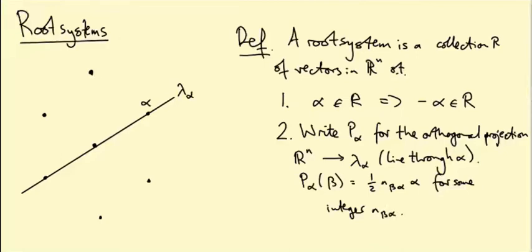So in this example, let's see what we get. If I just orthogonally project this root up here onto this line, I end up halfway along from the origin to alpha. So in this case, N_beta_alpha would be one. This is a half alpha. Similarly, if I project any of these guys down to here, I'm going to get a half alpha.